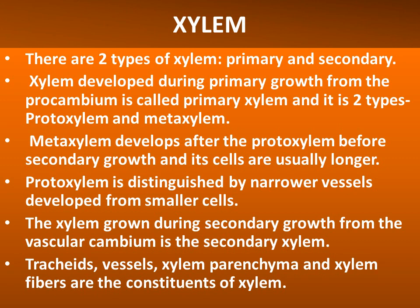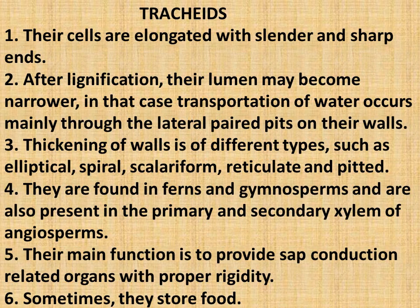Tracheids, xylem parenchyma and xylem fibers are the constituents of xylem. Tracheids: their cells are elongated with slender and sharp ends. After lignification, their lumen may become narrower. In that case, transportation of water occurs mainly through the lateral paired pits on their walls.